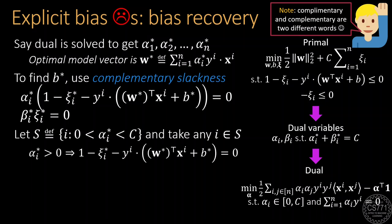Since alpha*_i is non-zero, complementary slackness tells us that the constraint expression must be 0, which means 1 minus xi*_i minus y_i times (w*)^T x_i plus b* must be equal to 0.